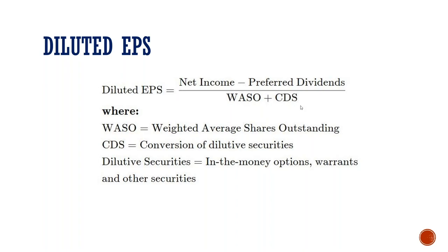What is preferred dividends? We have already mentioned net income is: revenue minus expenditure minus depreciation minus interest minus taxes. Preferred shares are a special type. Normal shareholders may or may not receive dividends, but there are preferred shareholders.